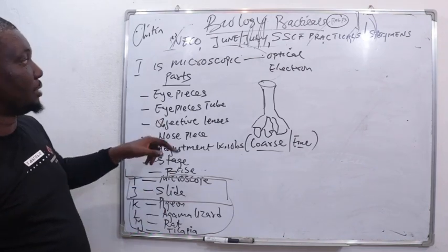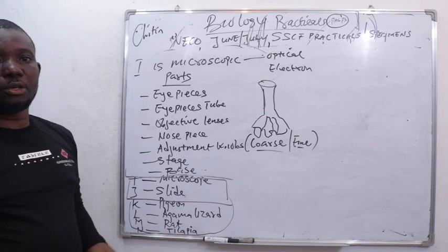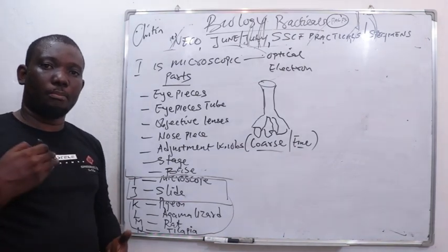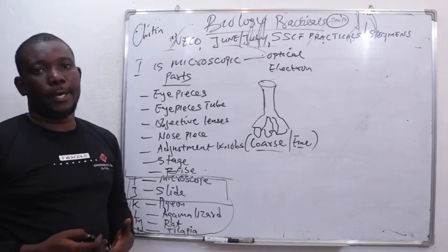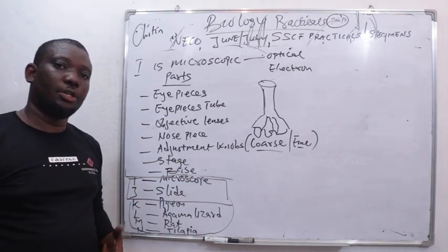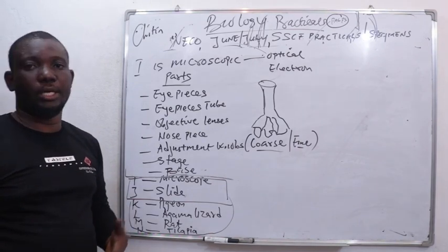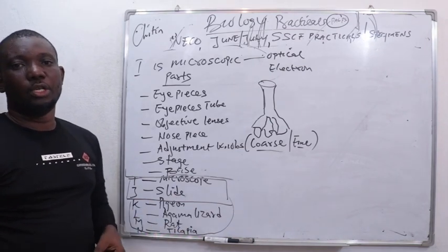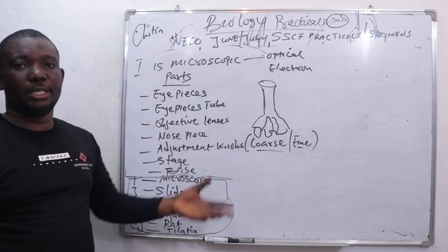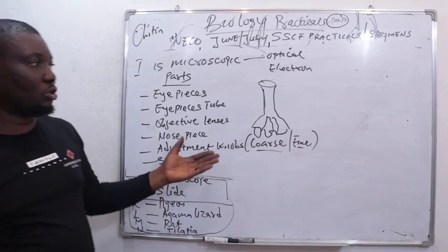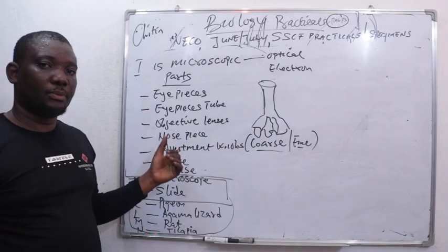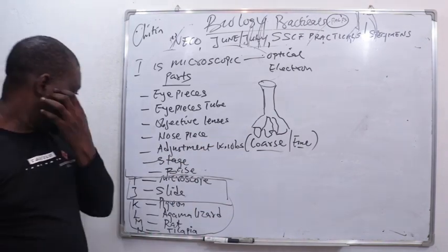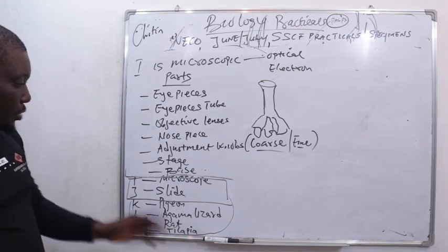Before we look at the slide, what are the functions of microscope? Microscope is simply used in a laboratory to observe microorganisms that cannot ordinarily be seen with naked eye. You can also use it to magnify macroscopic organisms. At this level, you most likely use something else as an alternative for microscope, which is hand lens. Hand lens can also be employed to magnify.